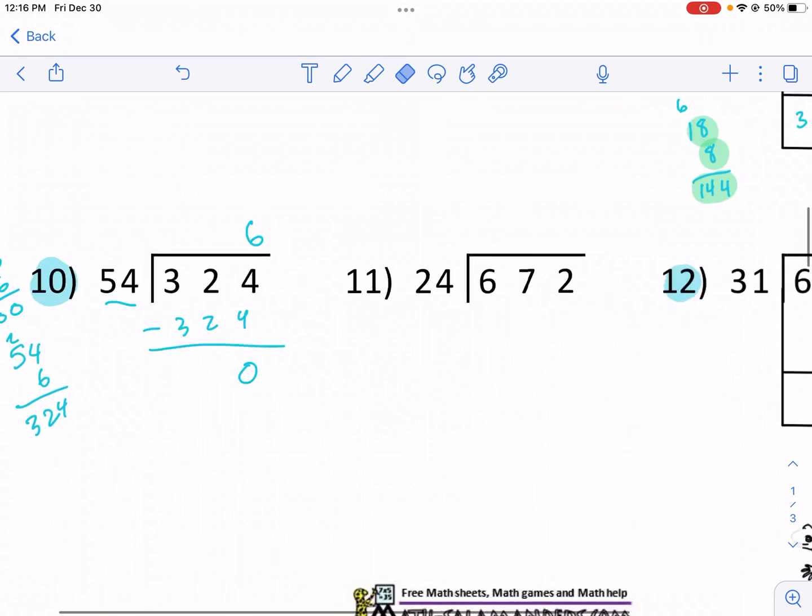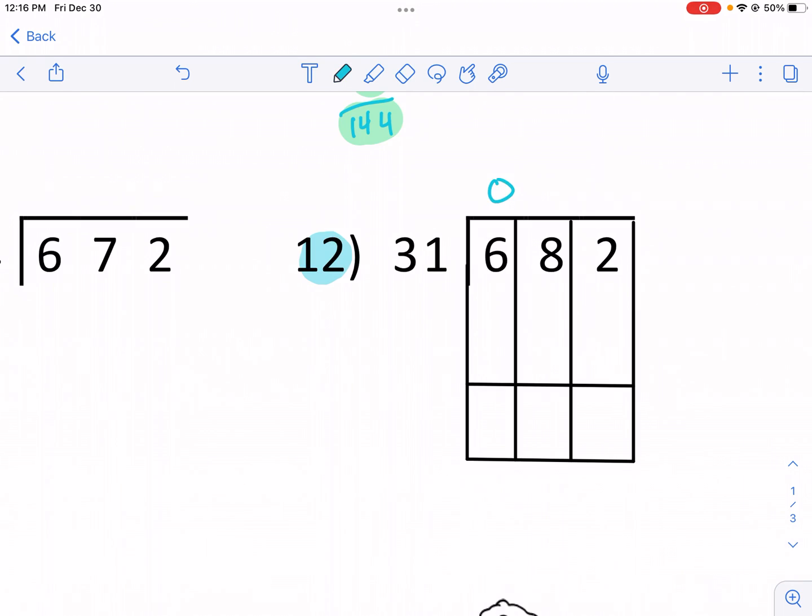Last one. 31 goes into 6 zero times. Again, we can just jump right to 68. I know it's going to go in 2 times. That's 31 times 2. It gives me 62. My remainder is going to be 6. And then I have 62 again. And I get 2 times. 31 goes into 62 2 times. And that's 62. 62 minus 62 gives me a remainder of zero. So my answer is just going to be 22 for number 12.